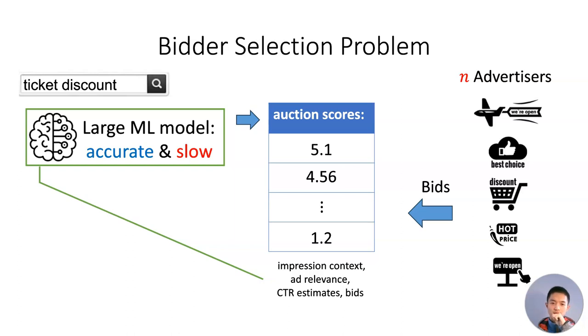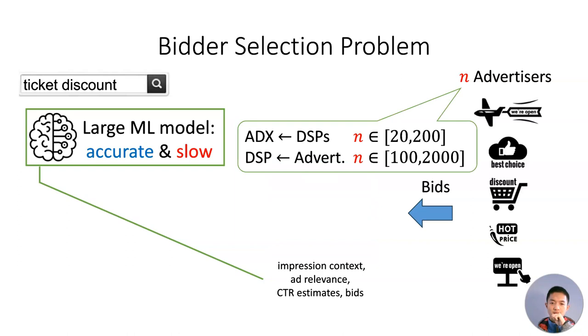Depending on the advertising scenario, demand-side platforms bidding on an ad exchange or private advertisers bidding on a demand-side platform, the number of advertisers N can be in hundreds or thousands.